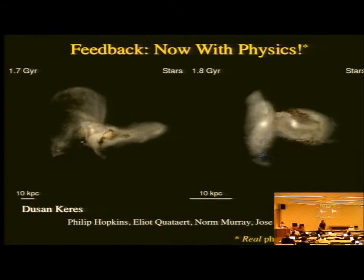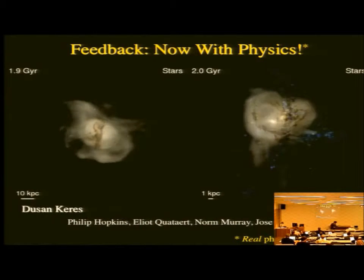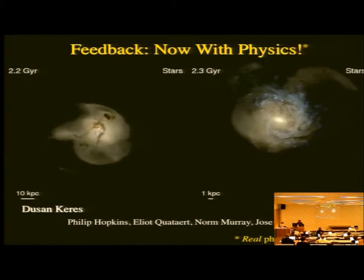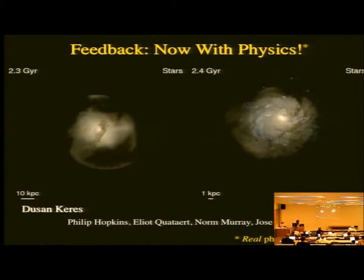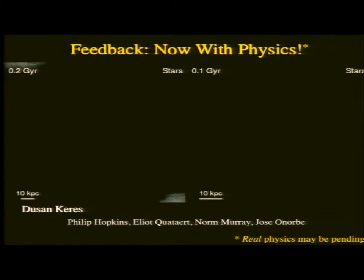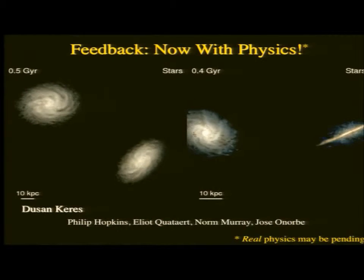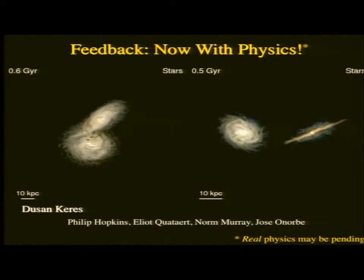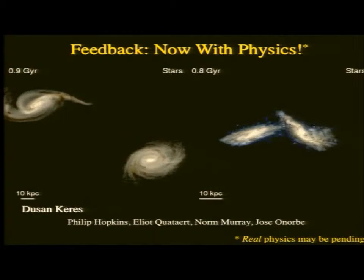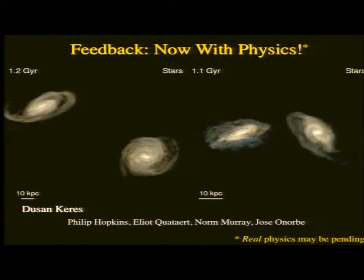Dushan was supposed to give this talk and apologizes for not being able to make it, but I'll be giving it on his behalf. It's on work that he and I have been collaborating on closely, also with Elliot Quadrant and Norm Murray, trying to put more realistic feedback physics into the simulations, starting from small scales and going up to inform the models we've all been talking about. This is also very much related to work by Jose Onyorbe that James Bullock mentioned during his talk.